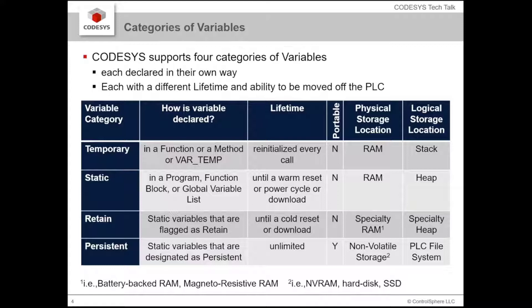And then you have your persistent variables. These are the variables that actually get stored off to the file system. They are non-volatile and can be portable — you can move them to a different system to power up that new system with those variables.